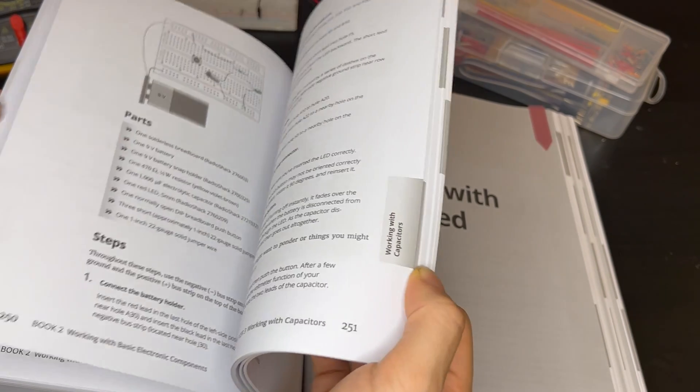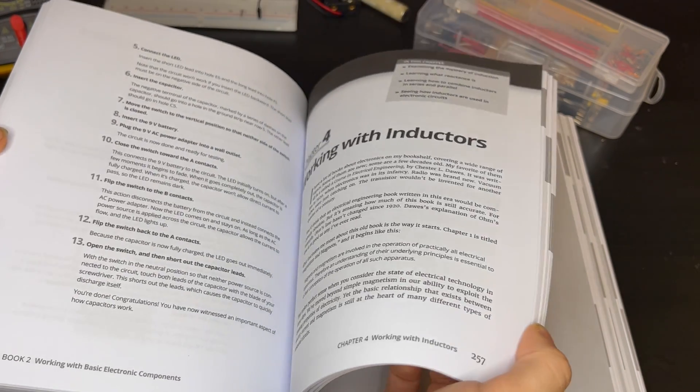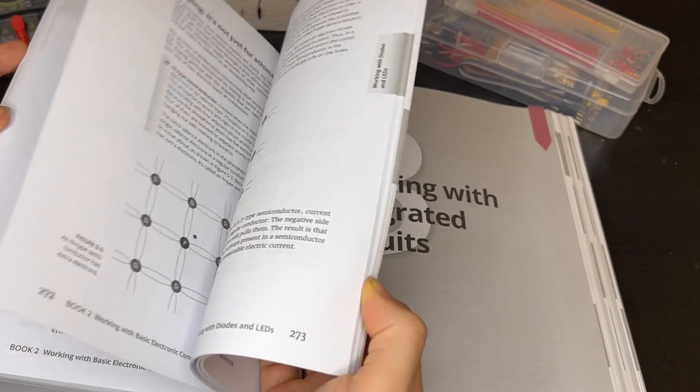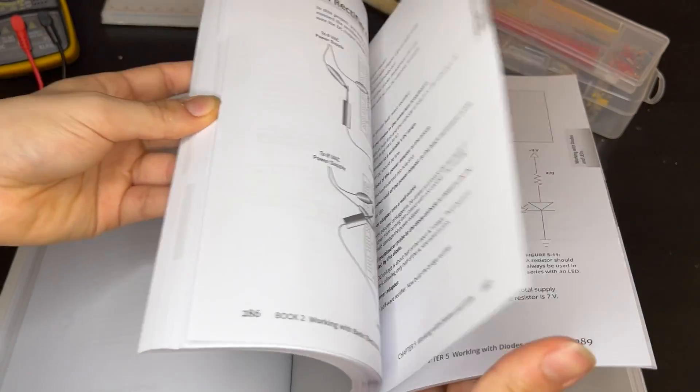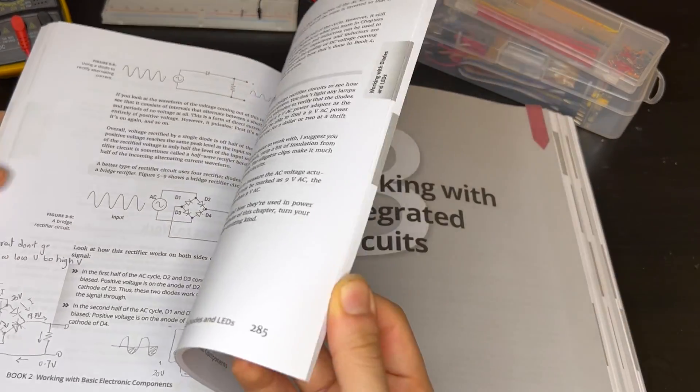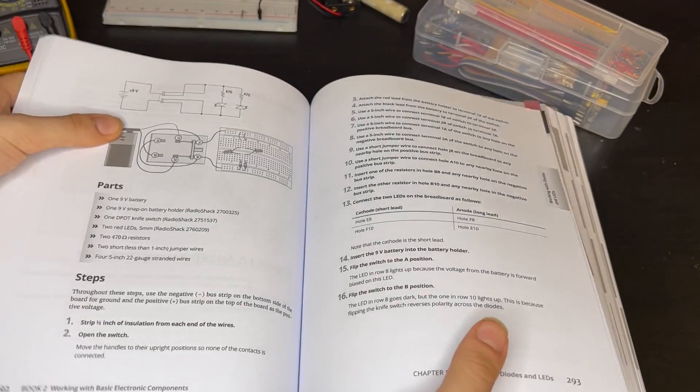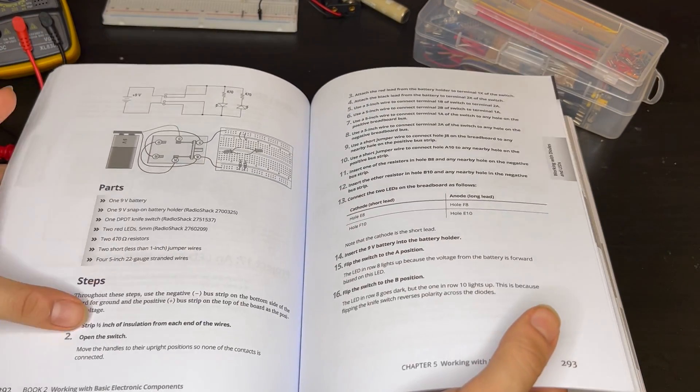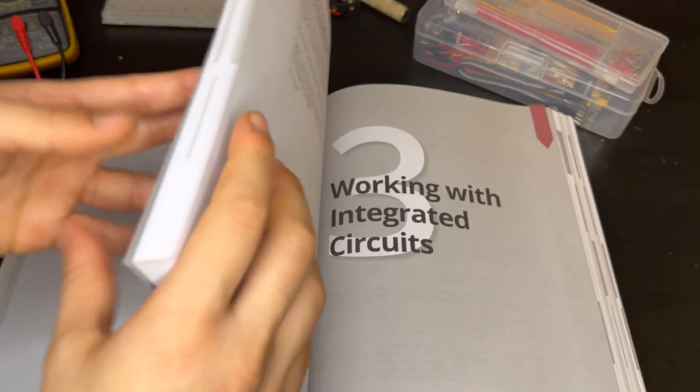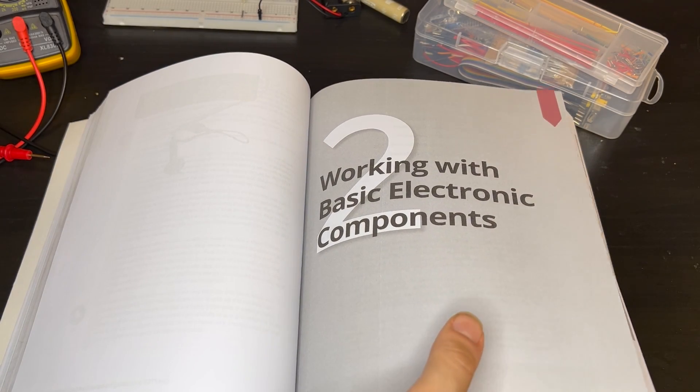In this second book, you learn about all the basic components: resistors, capacitors, inductors, diodes, LEDs, and transistors. You learn the basics like rectifying circuits. There are a lot of projects with pictures and detailed steps, so it's very easy to follow. By the end, you'll have built many circuits with the basic components.